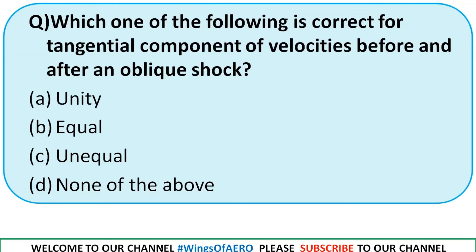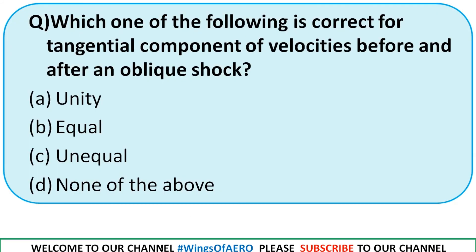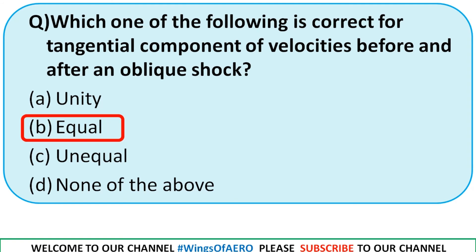Which is correct for the tangential component of velocities before and after an oblique shock wave — unity, equal, unequal, or none of the above? From the oblique shock wave relations, the tangential components are equal: V_t1 = V_t2. So the right option is option B.